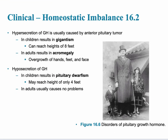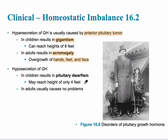For homeostatic imbalances of growth hormone, too much secretion — caused by an anterior pituitary tumor, for example — results in gigantism in children, and acromegaly in adults. Acromegaly occurs after the epiphyseal plate has closed, so areas like the hands, feet, and face increase in size. The opposite, hyposecretion, can result in pituitary dwarfism in children where height may reach only four feet, while in adults it usually doesn't cause problems.